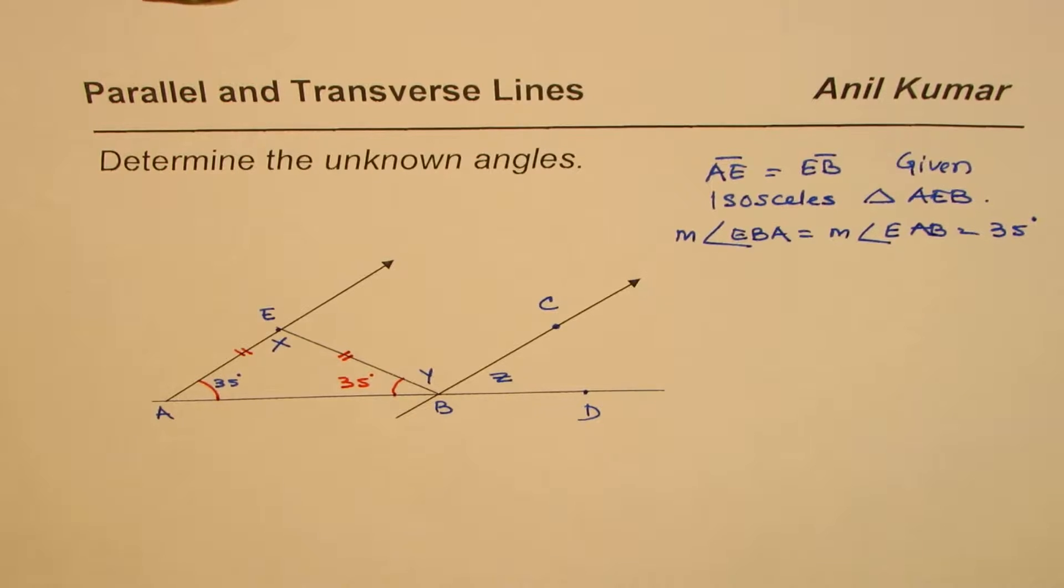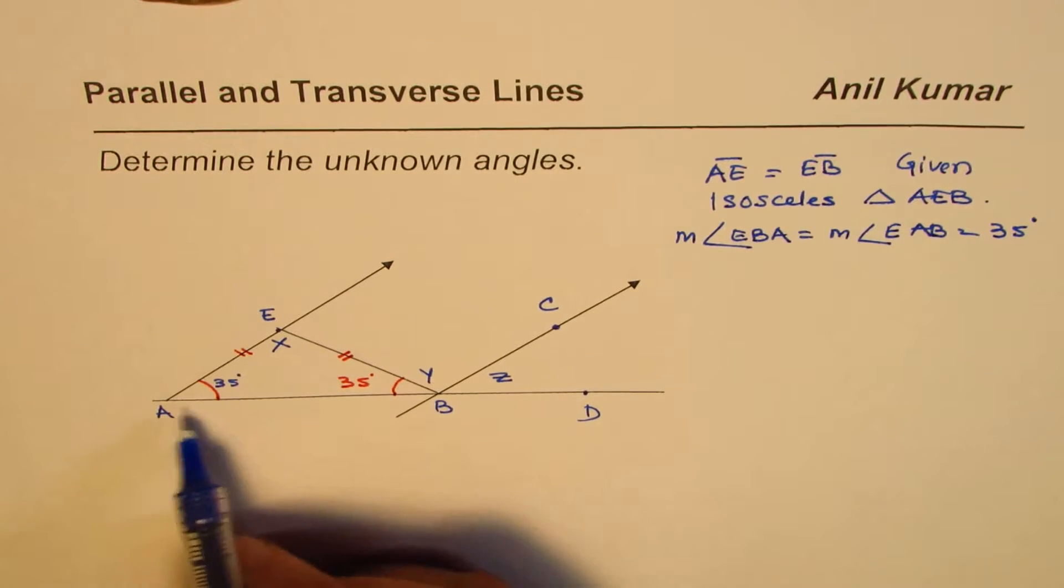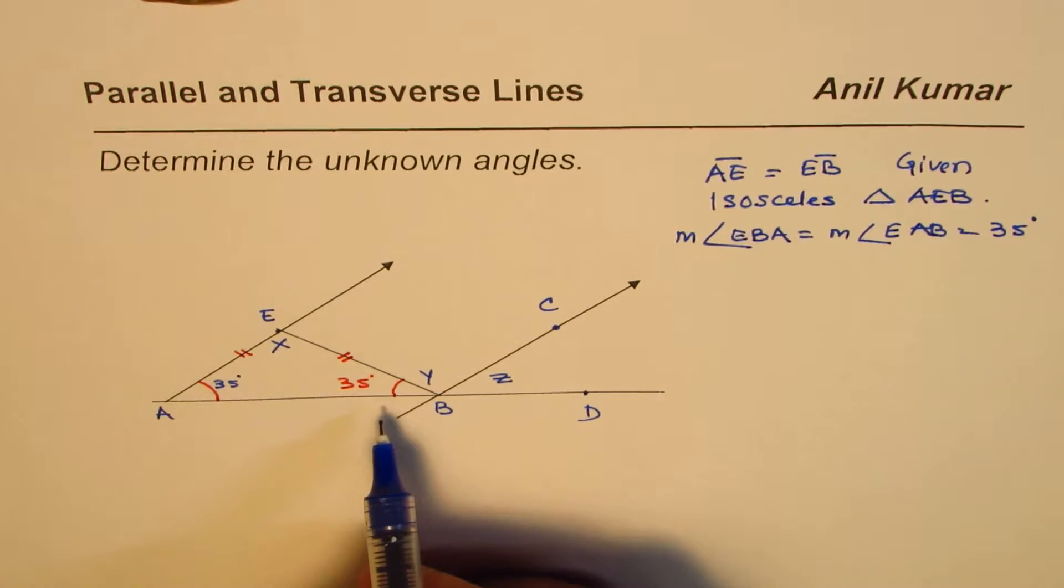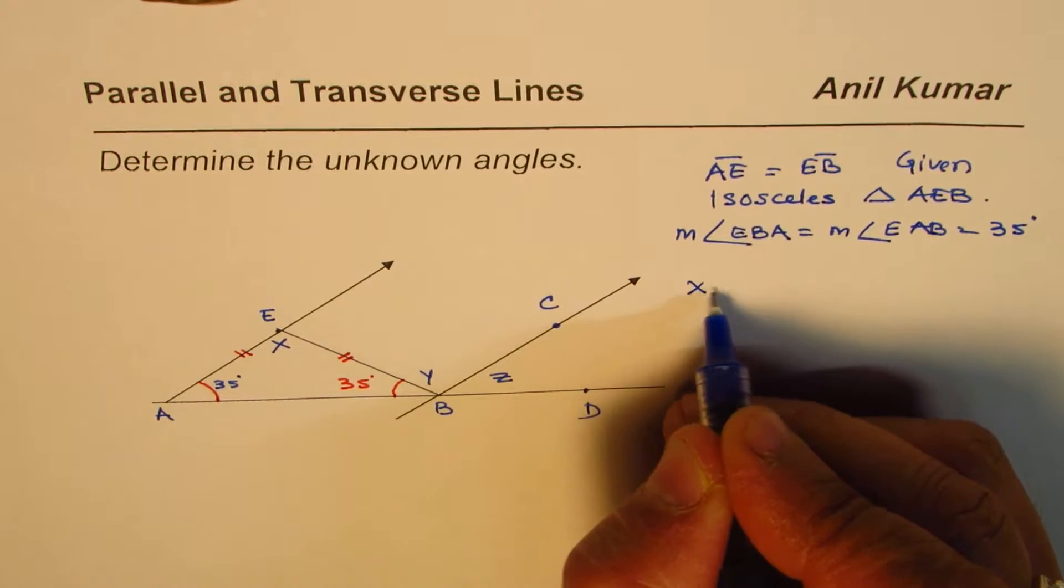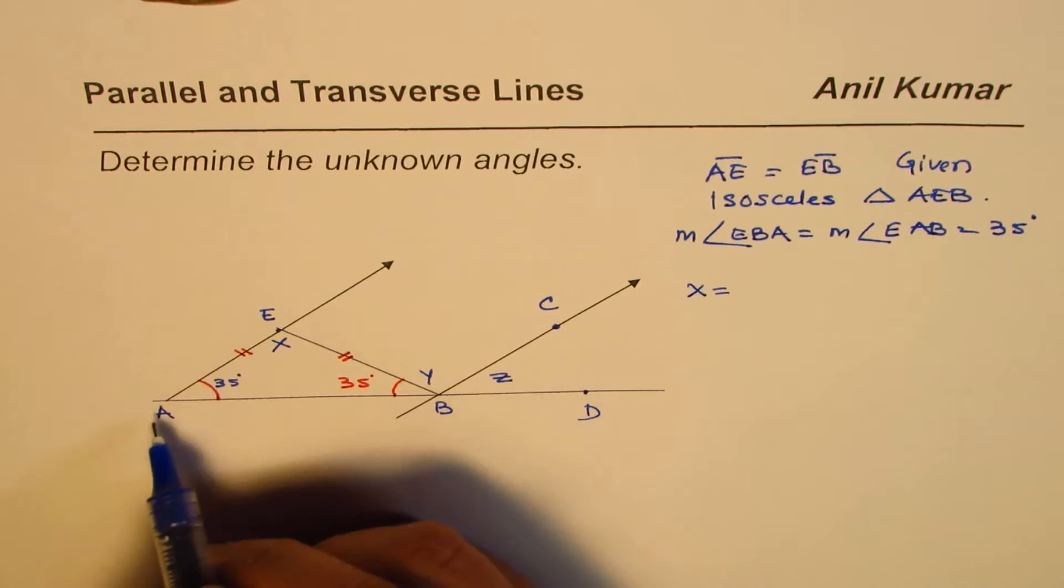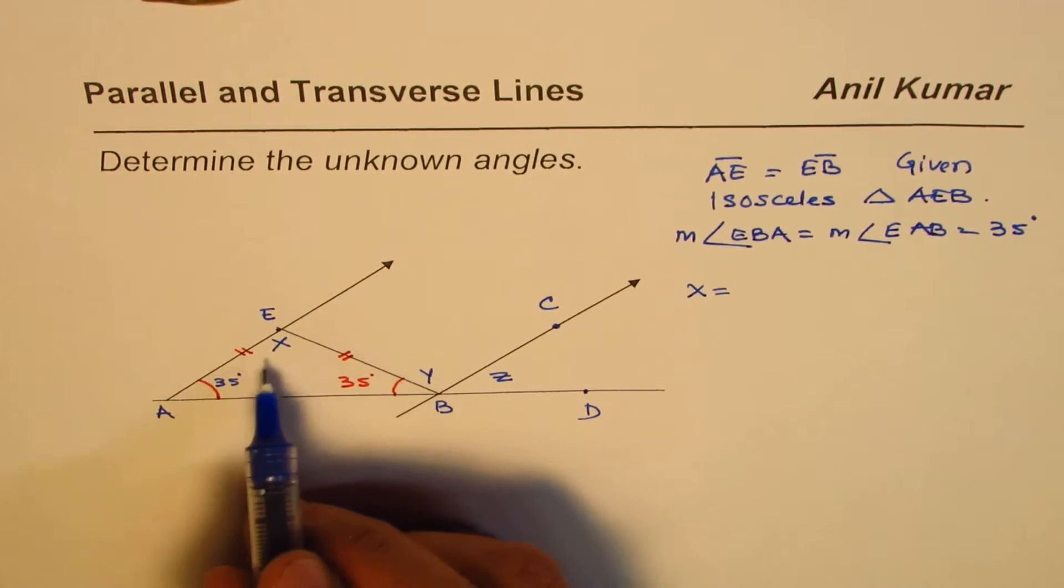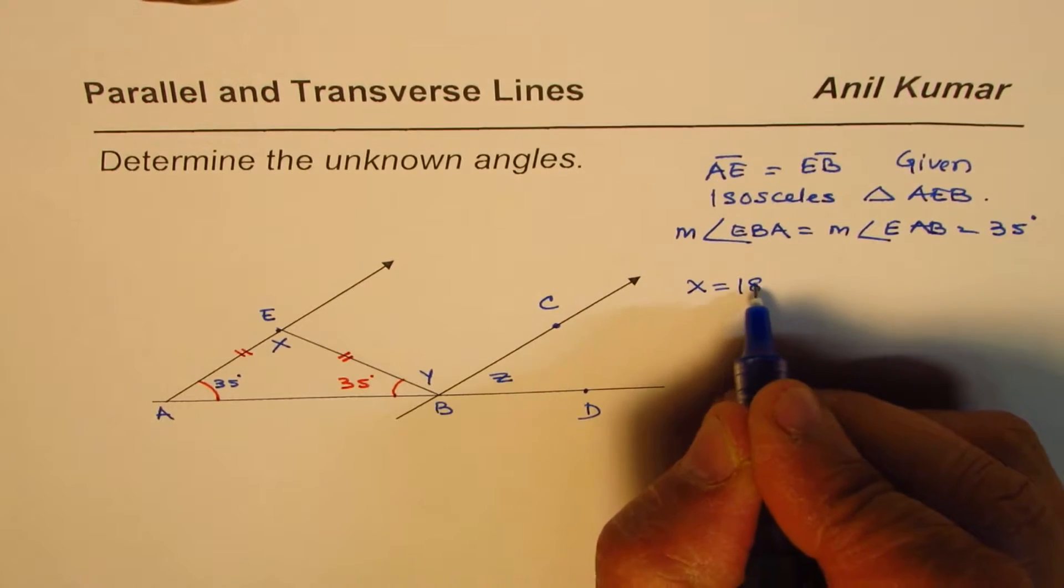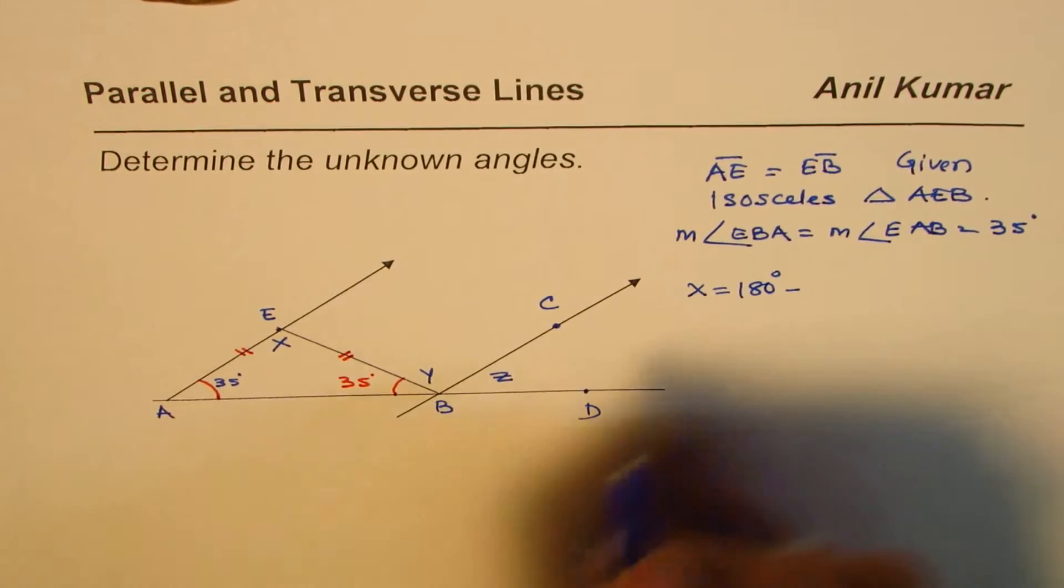Now we can find x. Since sum of angles in the triangle is 180, so what is x equals to? Measurement of this angle AEY is x. x is equals to 180 degrees, take away these two 35s.